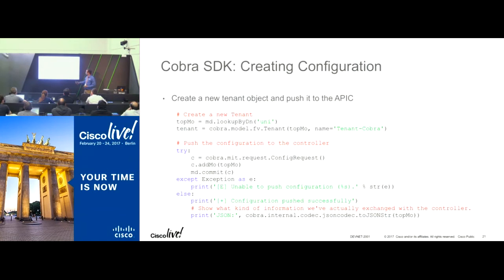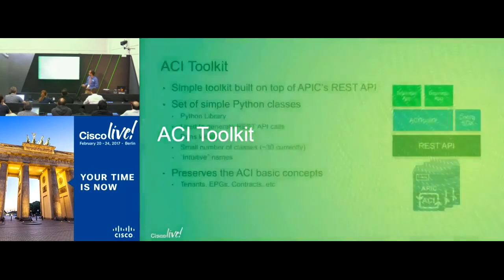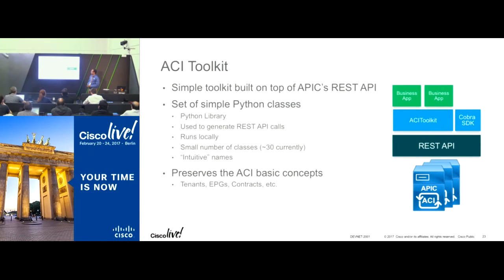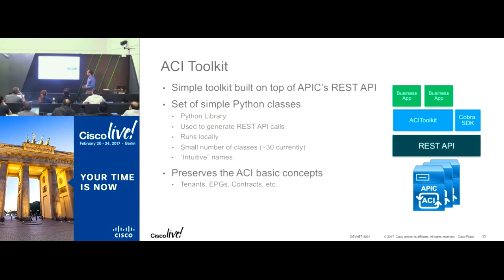If I want to do the same thing in raw REST, my code would be about 40 lines. With Cobra, it's three or four calls. If you want to simplify further, ACI Toolkit is an even simpler version — it's all about calling tenant, EPGs, and other familiar objects directly, without needing to know complex class names like Cobra MIT request packages.